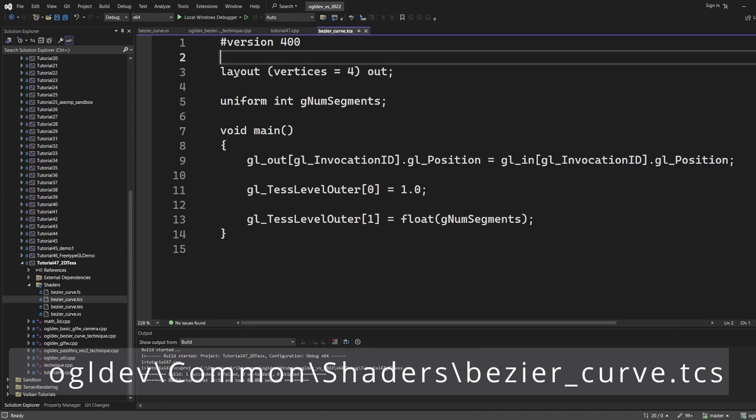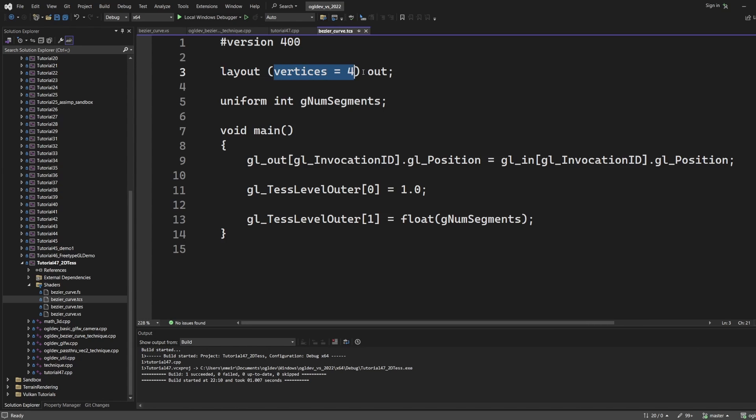Next comes the TCS. Here we use the layout qualifier to set the number of vertices in the output patch to 4. So in this case we are not changing the size of the patch. We have 4 vertices in the input patch and 4 vertices in the output patch. We also have a uniform variable for the number of segments. The first line in the main function copies the input attributes to the output. Notice how this works.